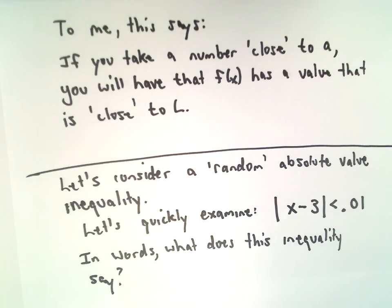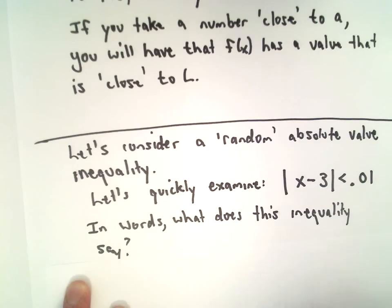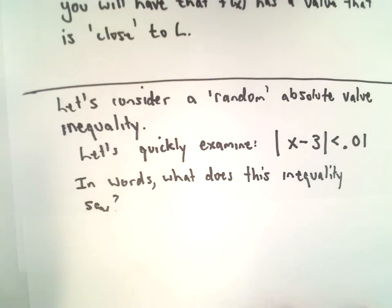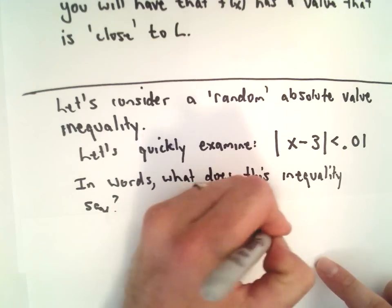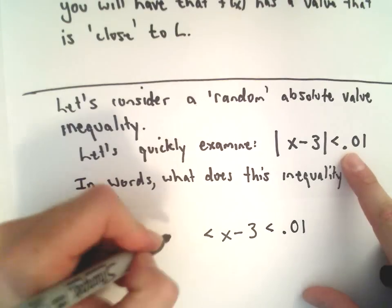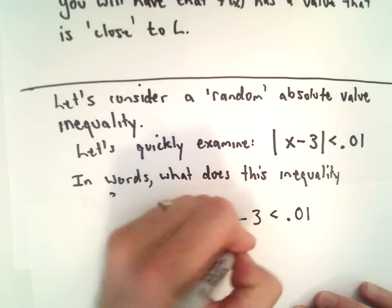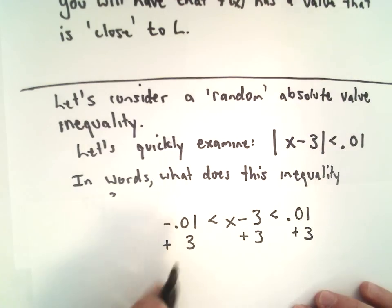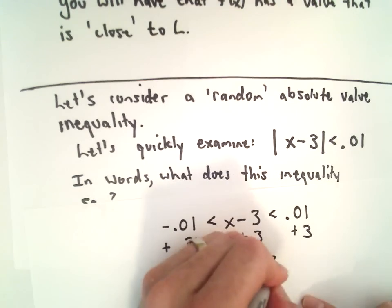So let's look at just a random absolute value inequality — let's think about this inequality: the absolute value of x minus three, less than 0.01. In words, what does this say? What does this inequality mean to you? To me, I can put it in words, but let's look at solving it real quick. To solve this type of absolute value inequality, we just remove the bars, then we also make an inequality where x minus three is greater than the negative of that number — so negative 0.01. The solutions are found by solving this compound inequality. We'll just add three to both sides — positive three minus 0.01 is 2.99, and 0.01 plus three is 3.01.